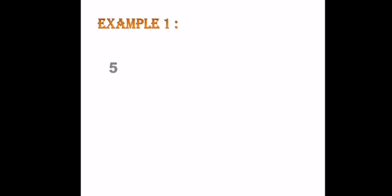Example number one: five, two, three, seven. Now, we're going to figure out the biggest number through comparing numbers. Let's compare five to two. Five is bigger than two. So, we take five and leave two.